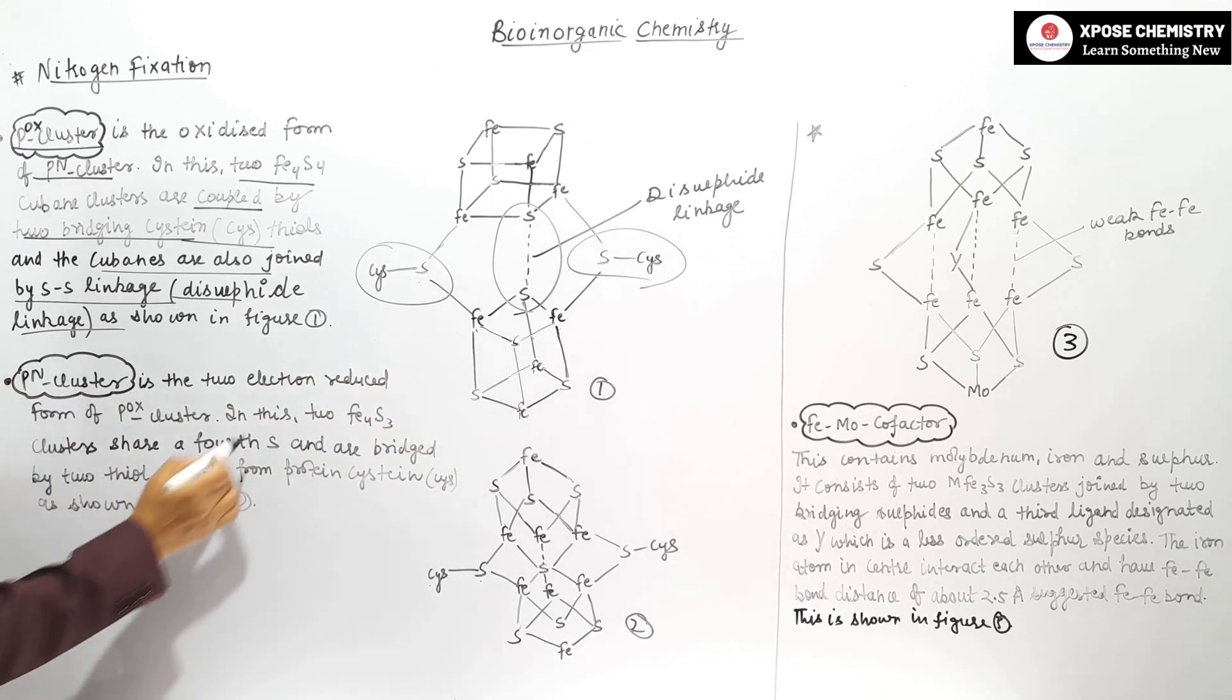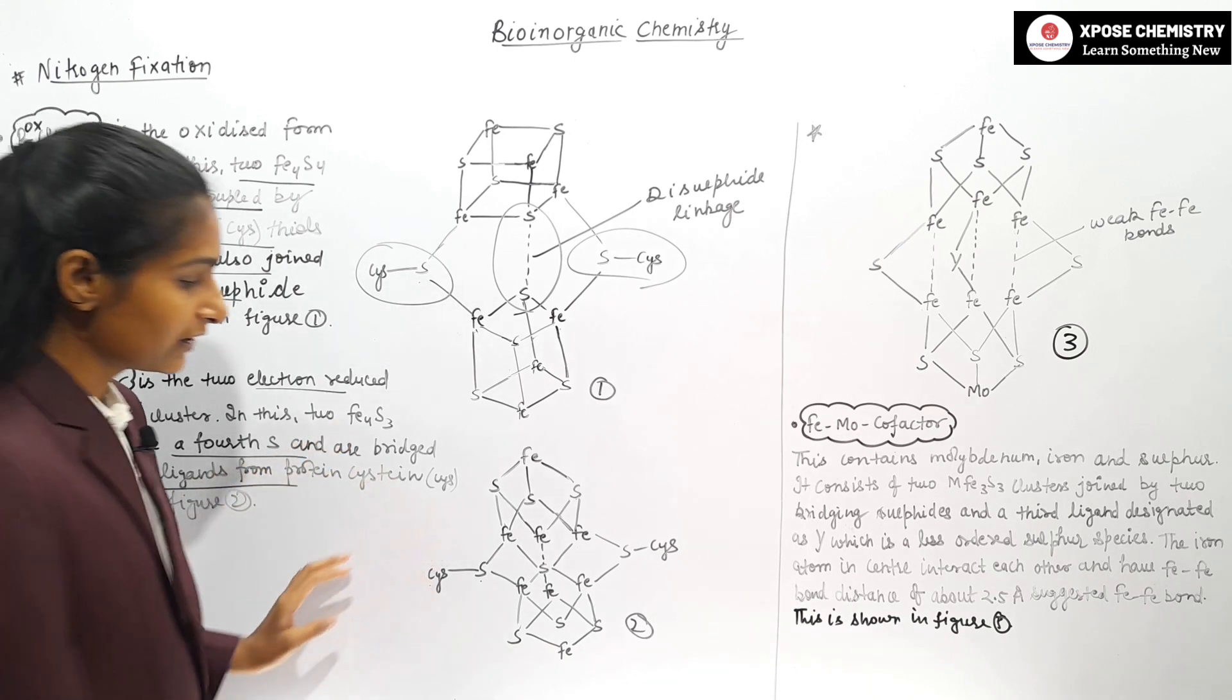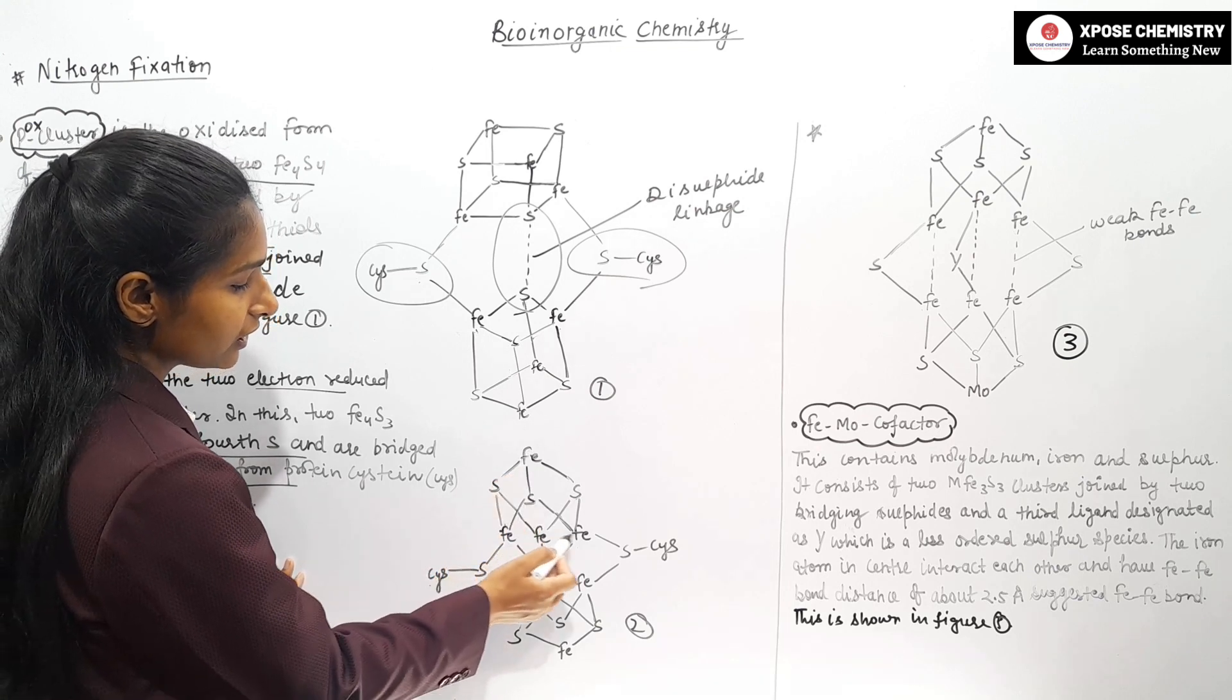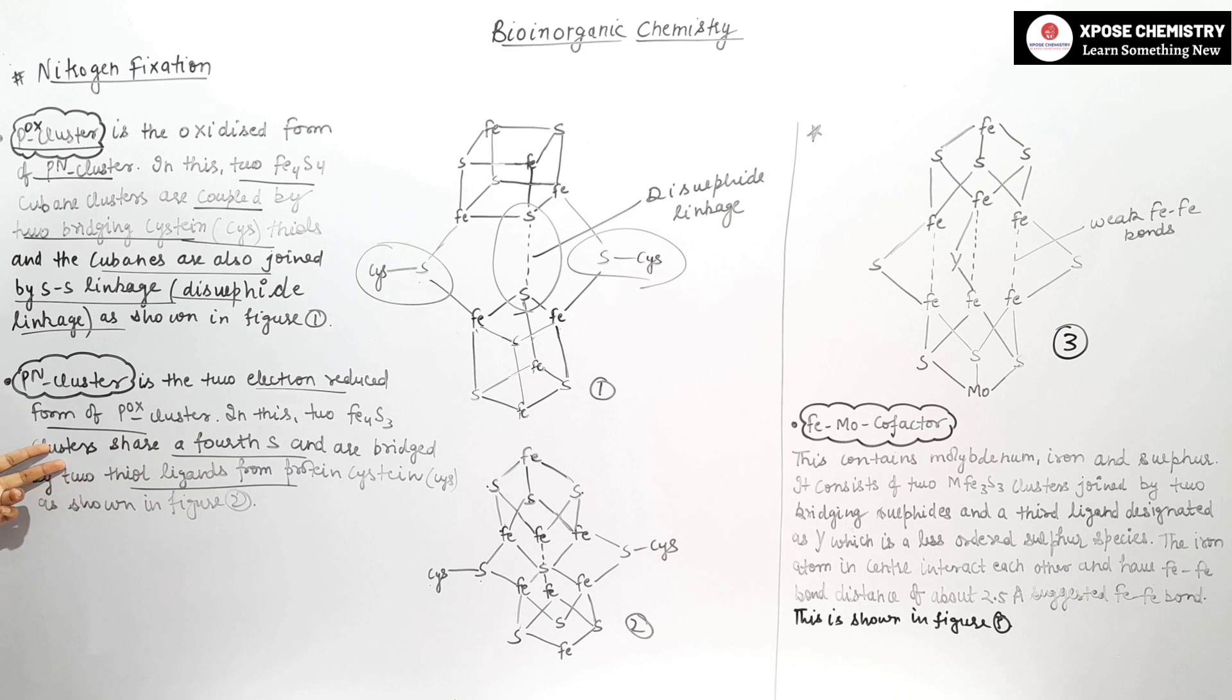The P-N cluster is the 2-electron reduced form of the P-OX cluster. There are 2 Fe4-S3 clusters that share the fourth sulfur atom.